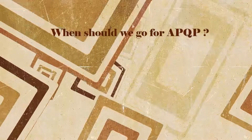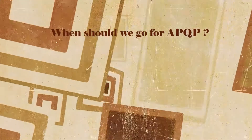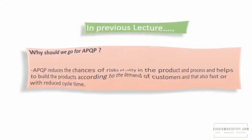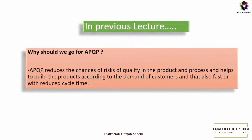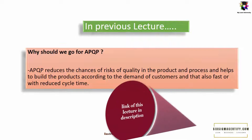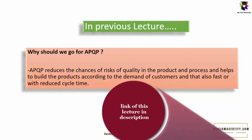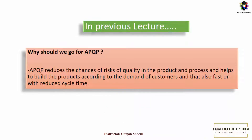When should we go for APQP, or Advanced Product Quality Planning? In the previous lecture, we studied why we should go for APQP. We talked about how APQP basically reduces the chances of quality risk in the product and the process, and helps to build products according to the demand of customers — and that also fast, or reduces cycle time. Now let us discuss when it is a must to go for APQP or adopt APQP.